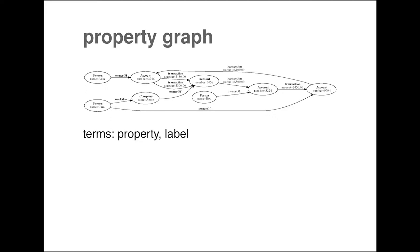This person is the owner of this account, and there are transactions between different accounts. In this case there are multiple transactions, so it makes sense to have multiple edges. This person is an owner of this account, and this person works for this company, who is the owner of that account, and so on.